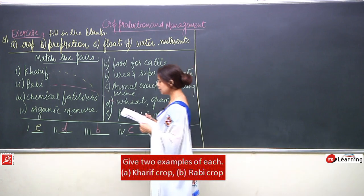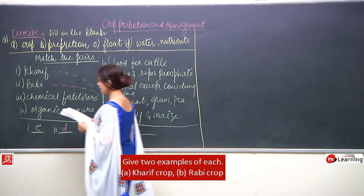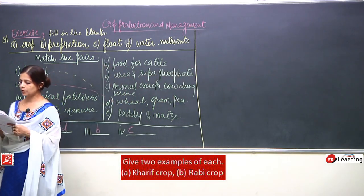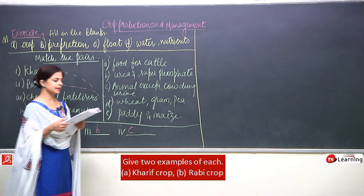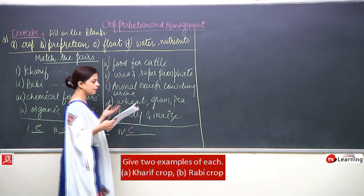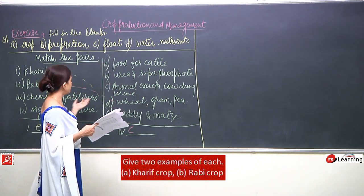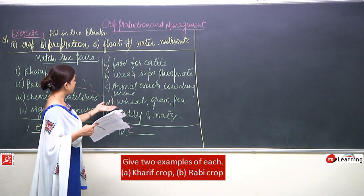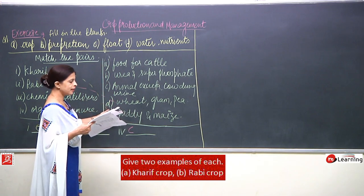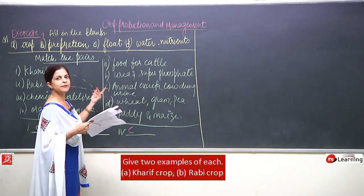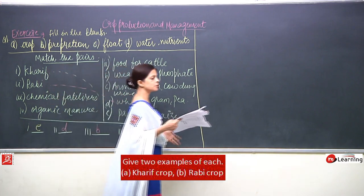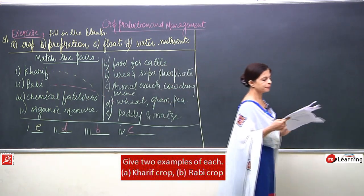The next question says give two examples of each. Kharif crop — two examples are paddy and maize from the matching; Rabi crops — wheat and gram. So the third question is solved automatically from the matching exercise.